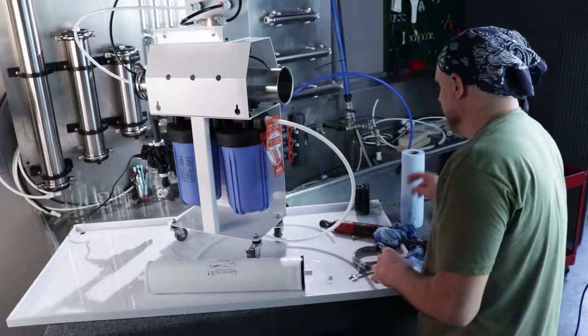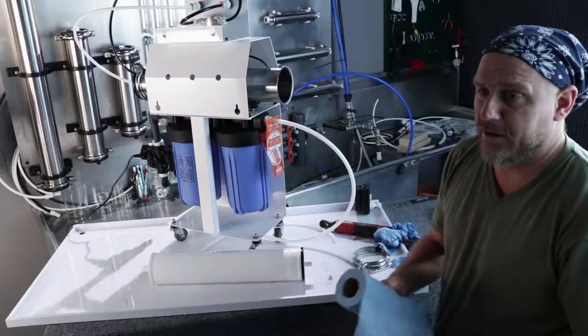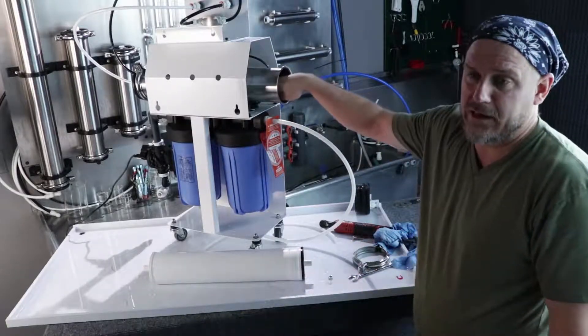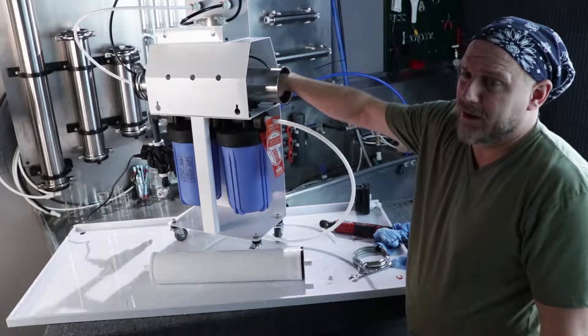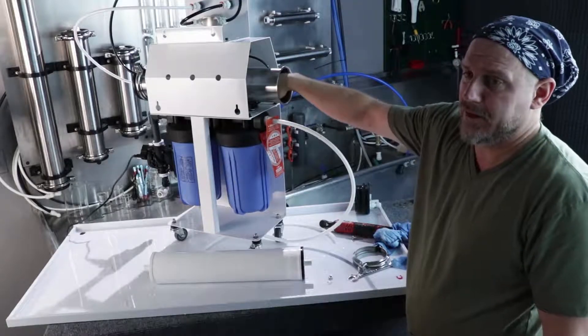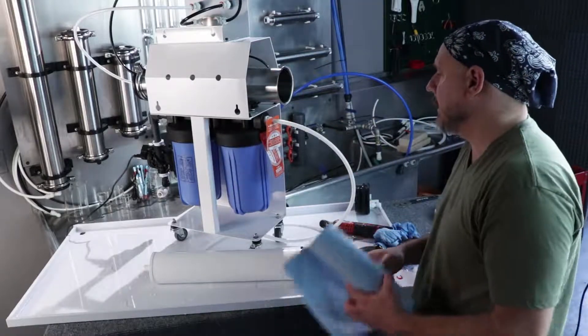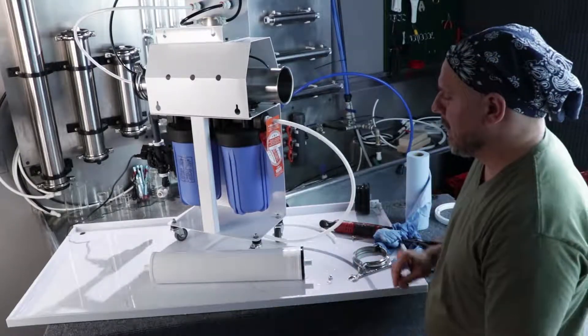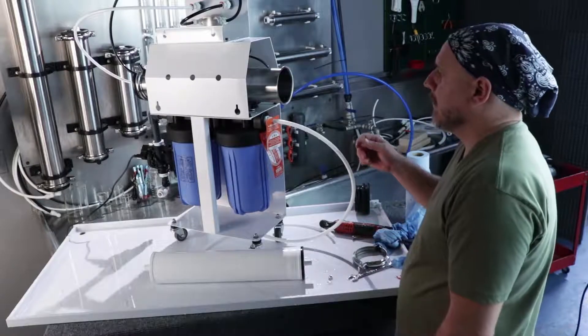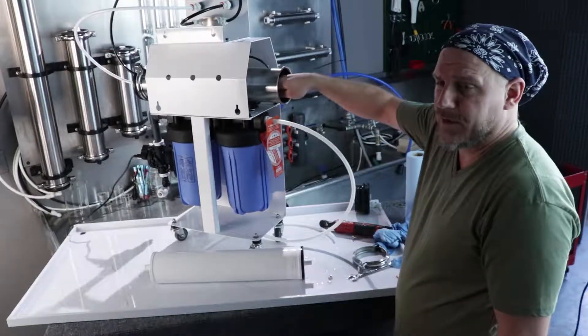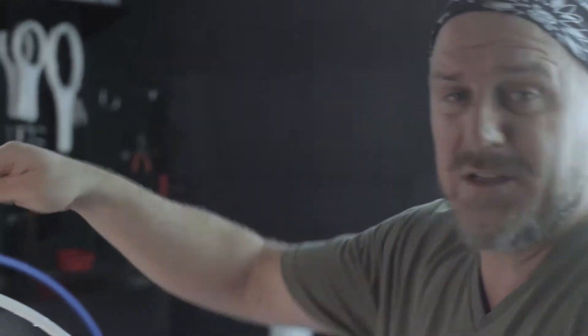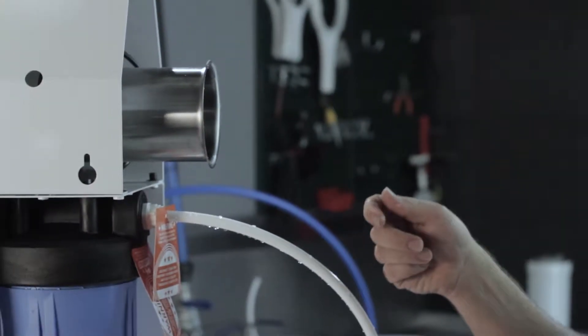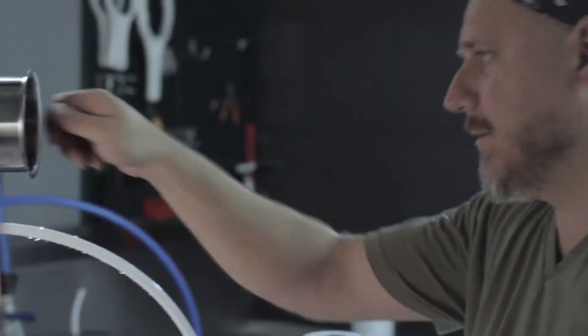Now usually what I like to do, depending on how dirty my feed water is, I like to clean this membrane housing out. If you're on really hard, scaly water, you can actually feel some scale crystals in here. Cleaning out is a good idea, especially if there's any dirt or sludge in it. This is a brand new one, so I'm not going to go any further with it. You don't really want to use an abrasive in here. You could use just a scrubby sponge and then take a hose or anything and just flush it out a little bit.